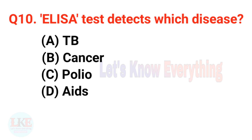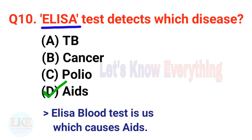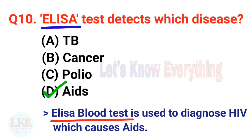Question number ten: the ELISA test detects which disease? A) TB, B) Cancer, C) Polio, D) AIDS. The right answer is option D, AIDS. The ELISA blood test is used to diagnose HIV, which causes AIDS.